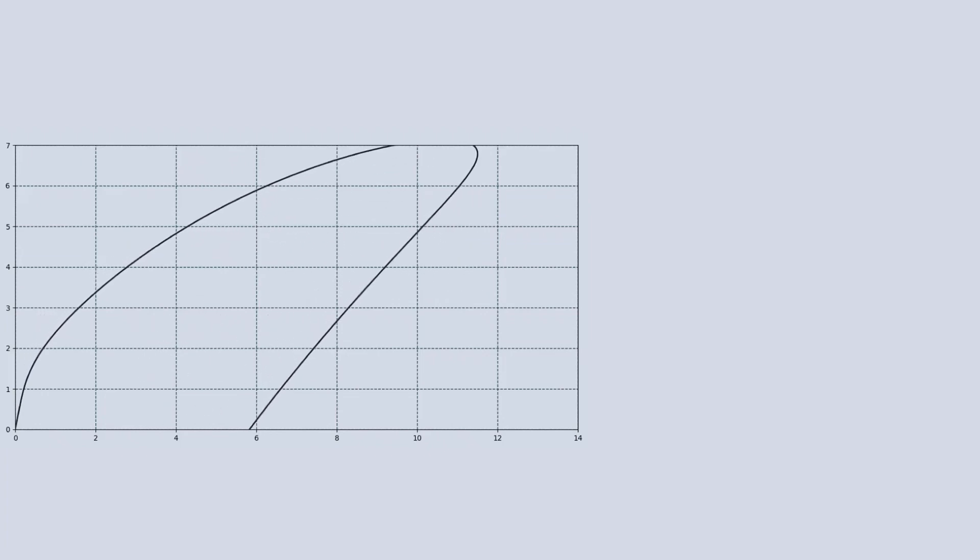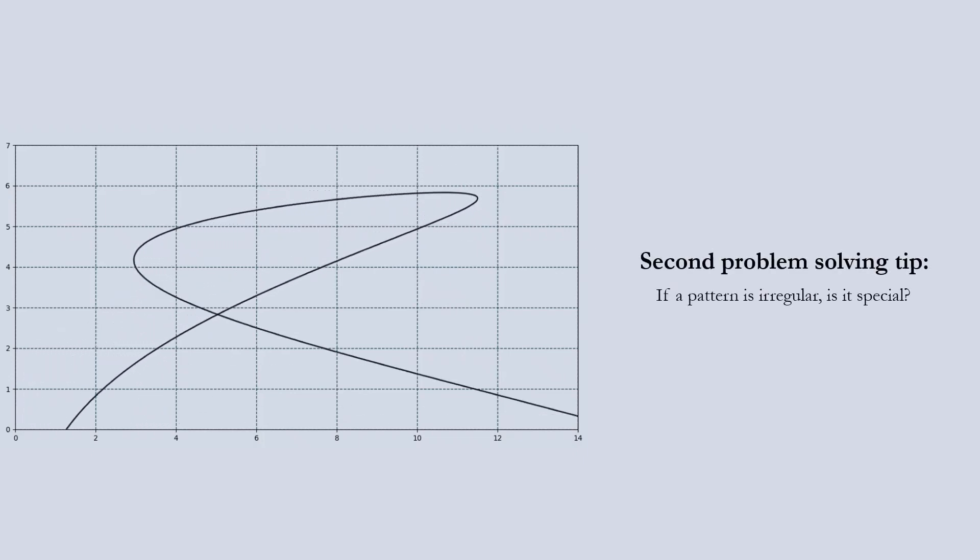Could you have solved the problem if I were to give you another shape? Here we arrive at our second problem-solving tip. If a pattern is irregular, is it special? What I mean by this is that you shouldn't focus on the specifics of our shape, but rather think of it as one of the many possible shapes. Now the question is, what do all of these shapes have in common?